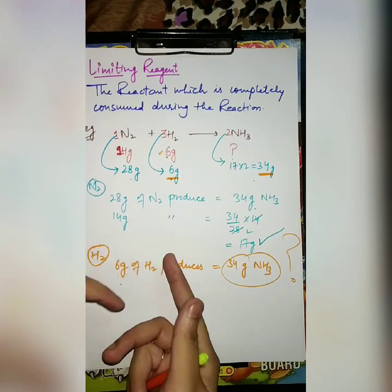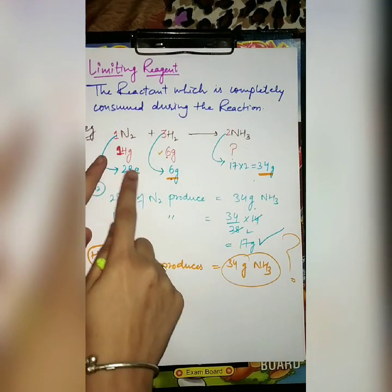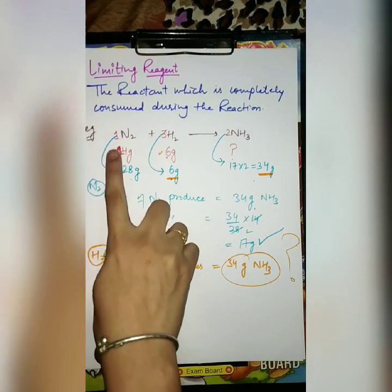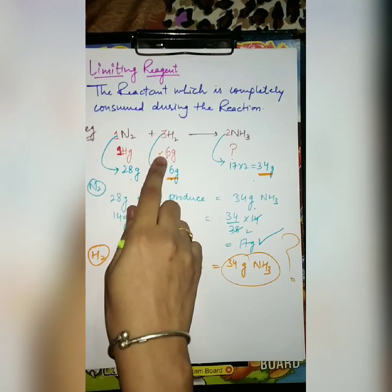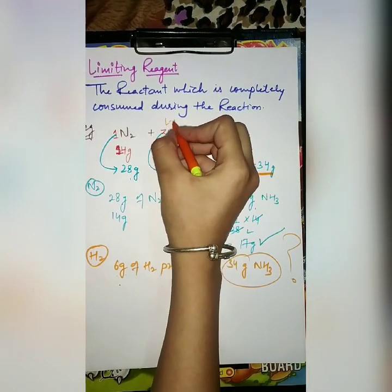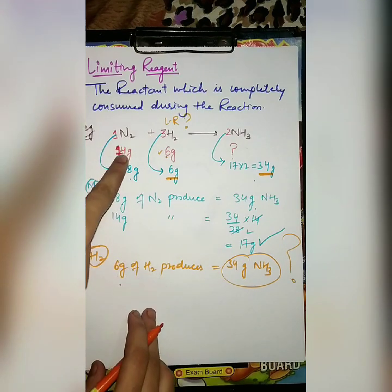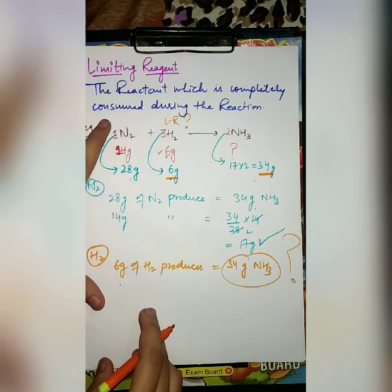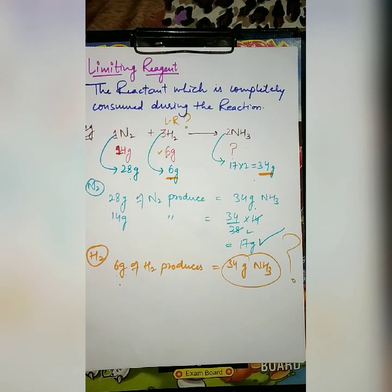That particular reactant which gives the lower amount of product is known as the limiting reagent. Now, you might say that since we used 14 grams of nitrogen and only 6 grams of hydrogen, hydrogen must be the limiting reagent because it has less mass. But we cannot decide based on mass alone, because it depends on atomic mass. We can only decide based on moles.